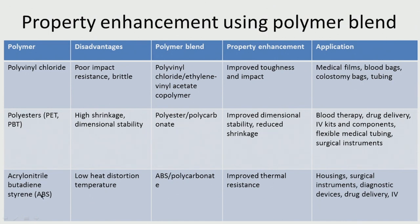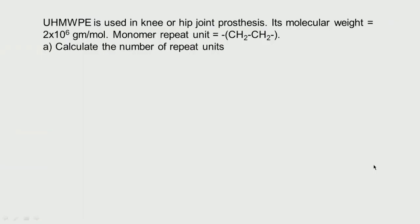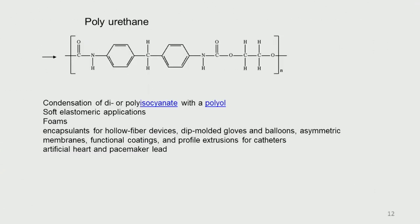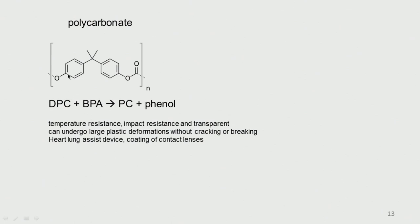Acrylonitrile butadiene styrene (ABS) is like rubber with a low heat distortion temperature, so they add polycarbonate, which has very good temperature resistance, allowing its use for housings, surgical instruments, diagnostic devices, and drug delivery. Polycarbonate is an engineering plastic. Its repeating unit is made from diphenyl carbonate and bisphenol A, producing polycarbonate and phenol as a byproduct.